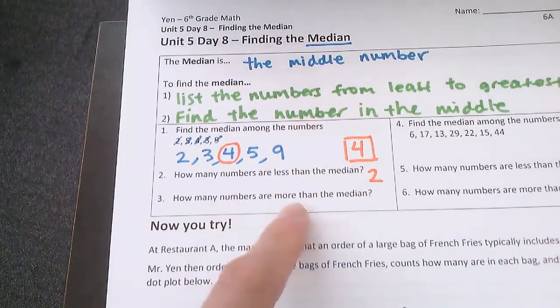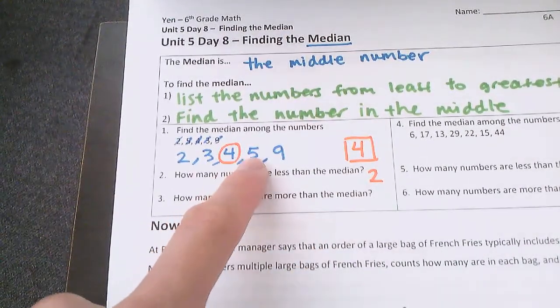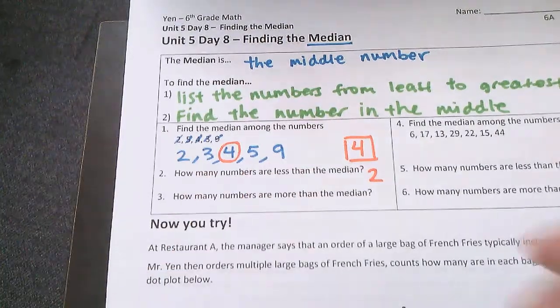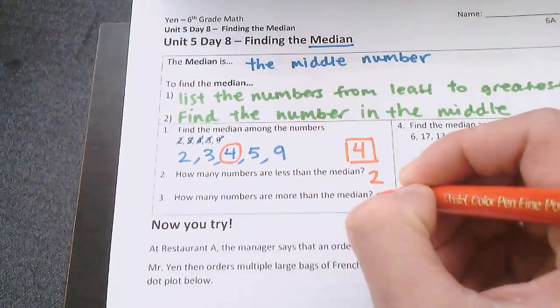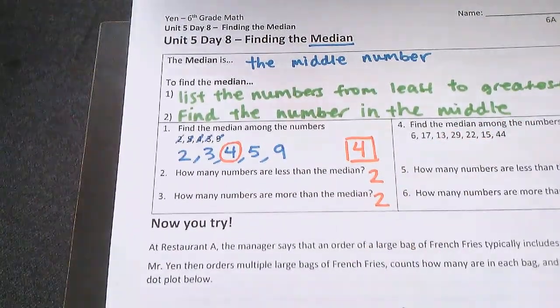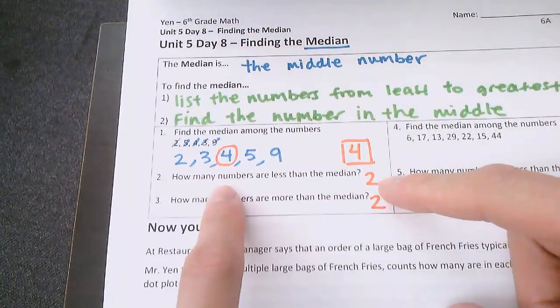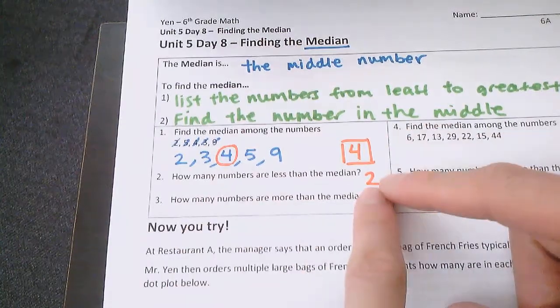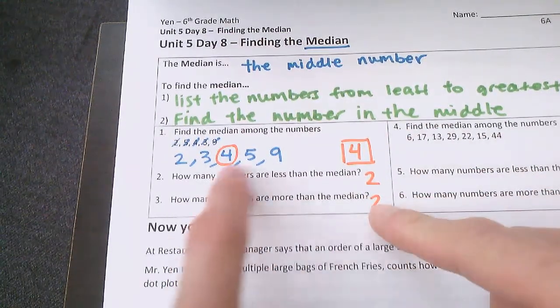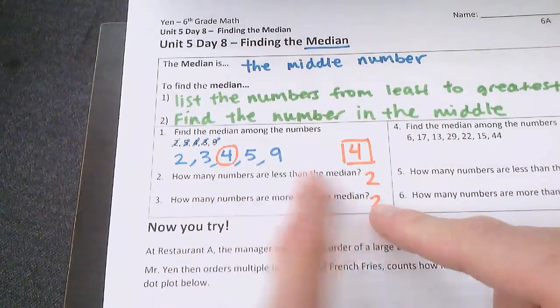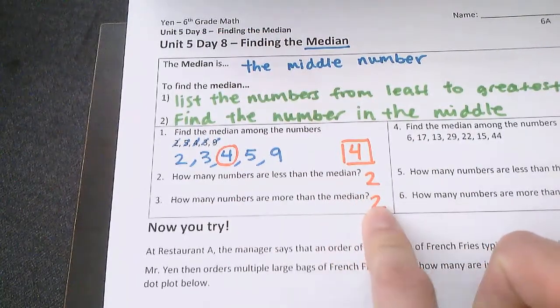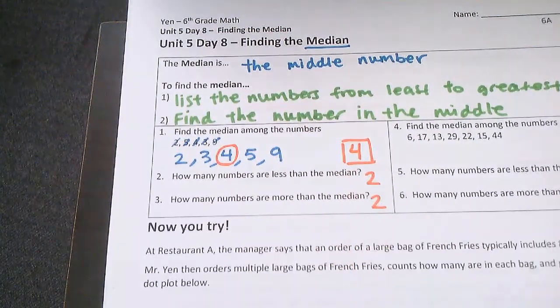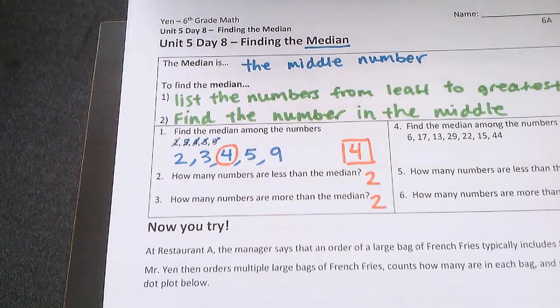If you found it correctly, the number of numbers that are less than the median should be the same as the number of numbers that are greater than the median. So two less than and then also two more than. That's how you know it's right in the middle.